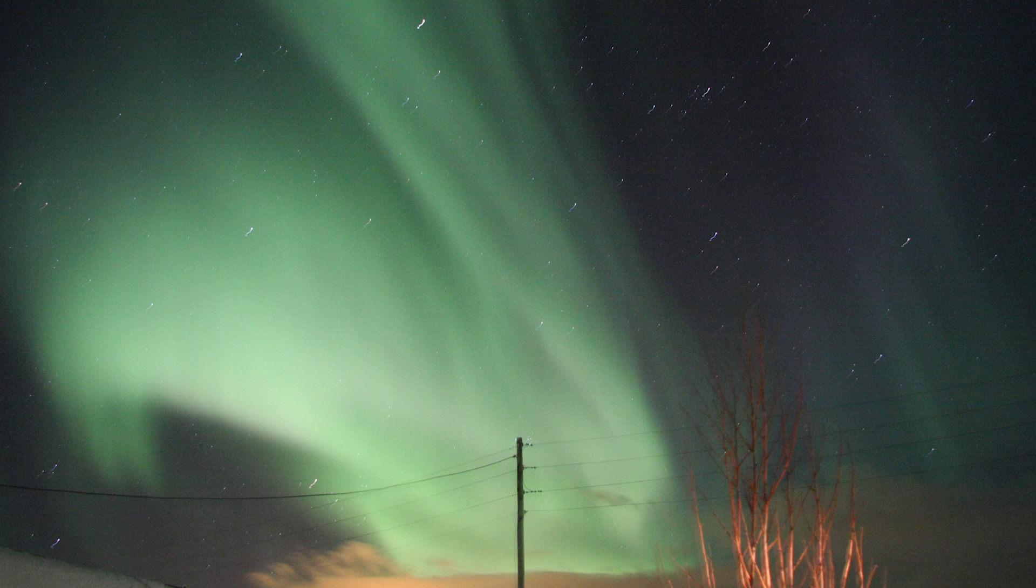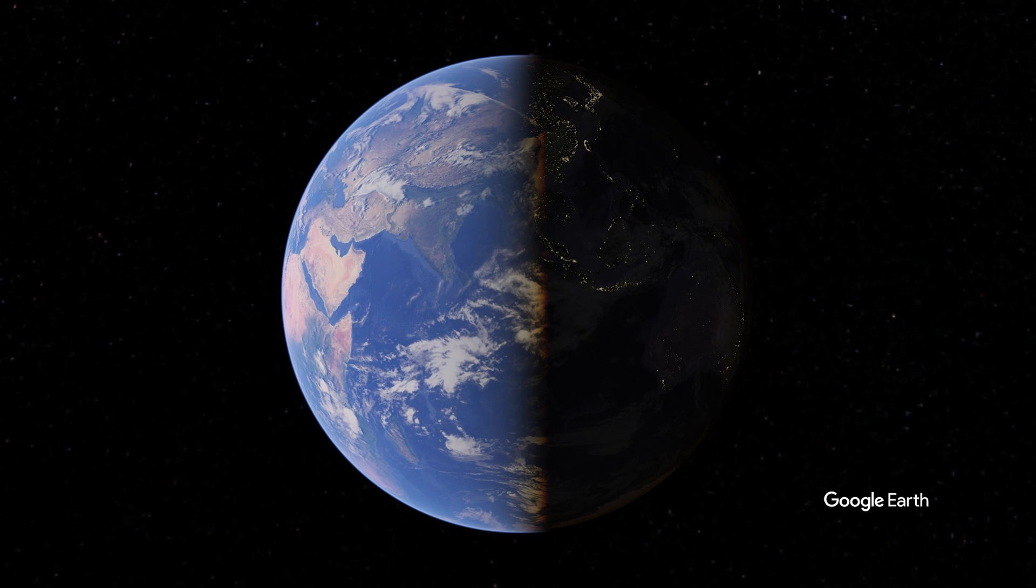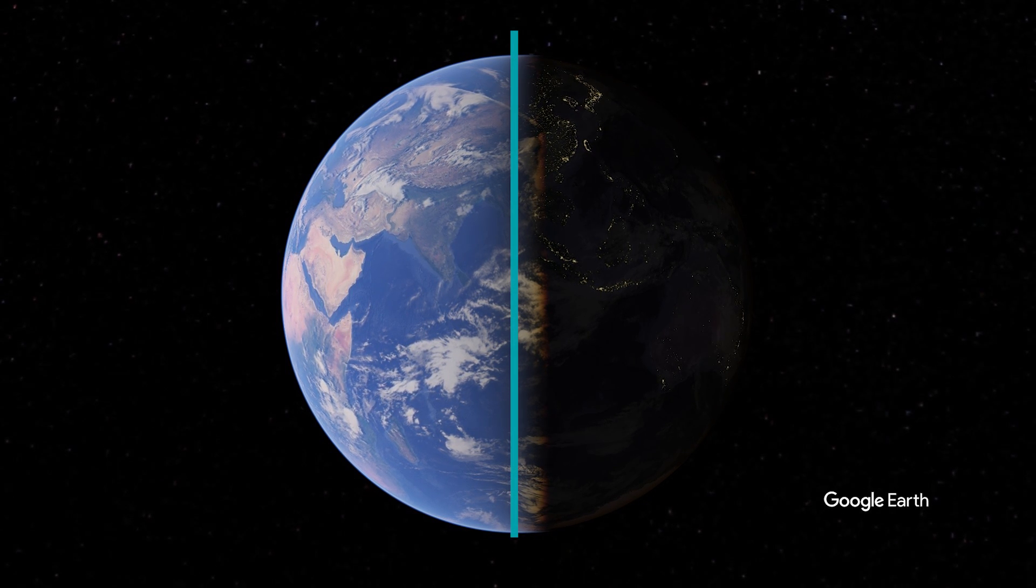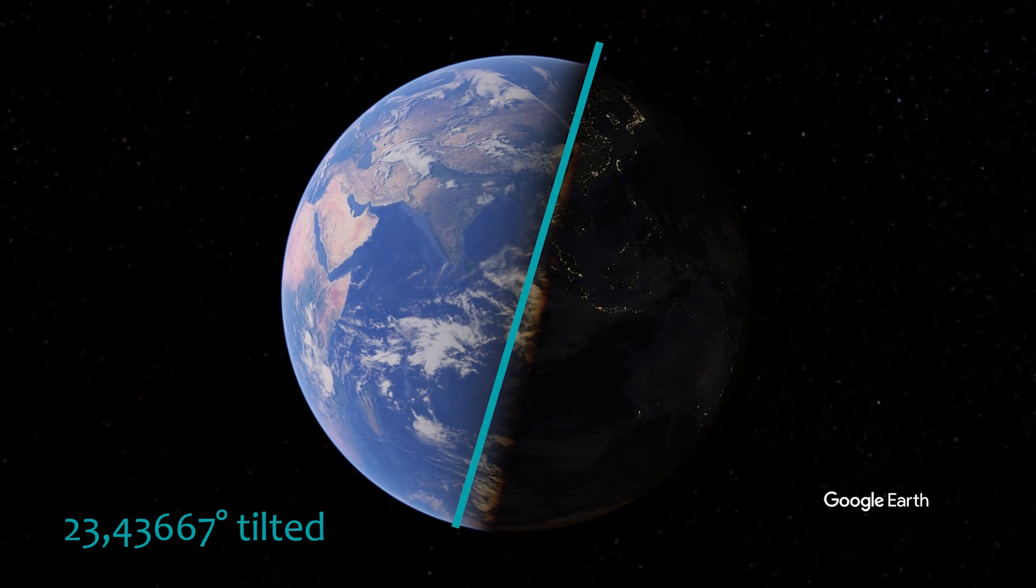To understand polar day and polar night I will start with the basics. This is our earth. But it's a misrepresentation. In reality the earth is tilted by about 23.4 degrees.